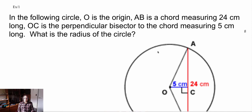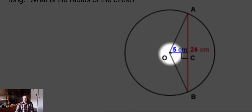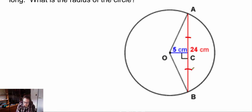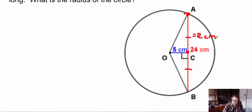In this example, circle O has its center at O. Chord AB measures 24 centimeters long, and OC is the perpendicular bisector of the chord measuring 5 centimeters. We need to find the radius. Since the blue line from the center is perpendicular to the chord, the chord must be bisected — split in two equal halves. So the distance AC equals 12 centimeters.